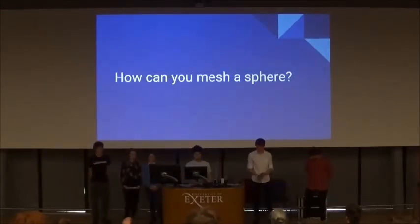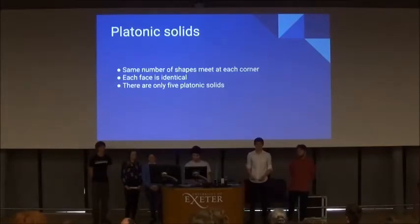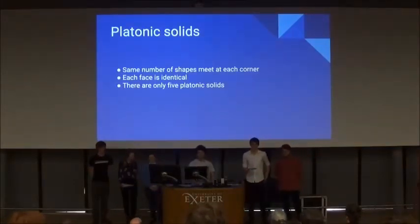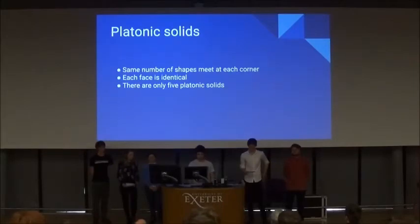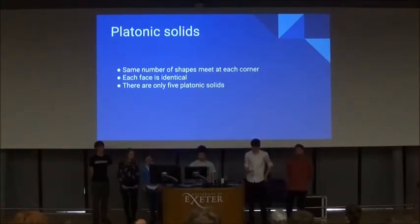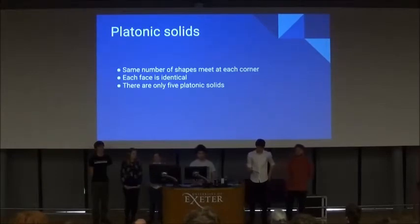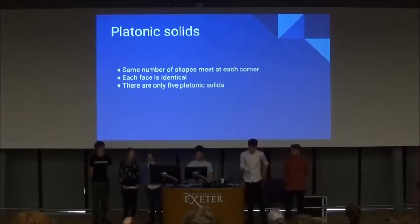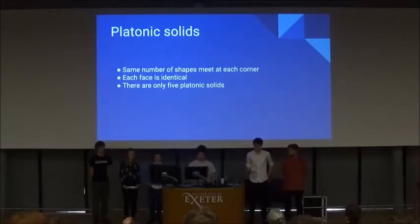So, how can you mesh a sphere? One way is using platonic solids. What are platonic solids? Platonic solids are 3D shapes. They all have the same polyhedron, which is a 2D shape, on each side, and that means they have identical edges, all the same length.